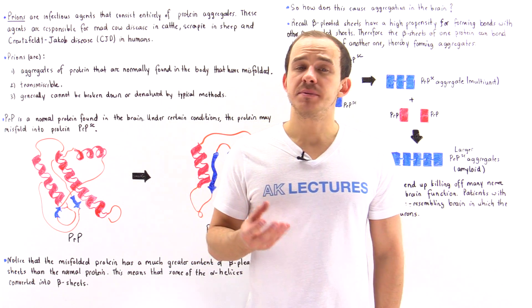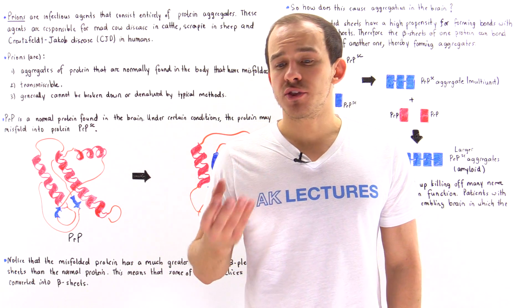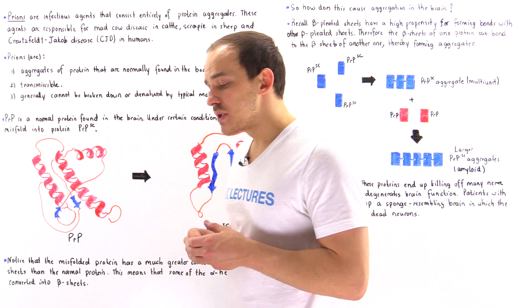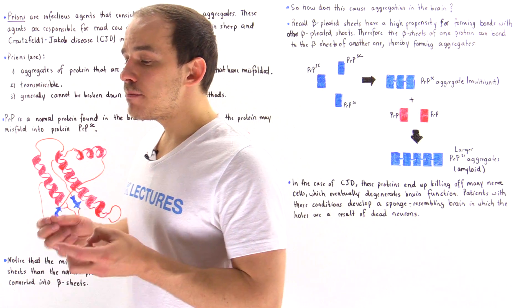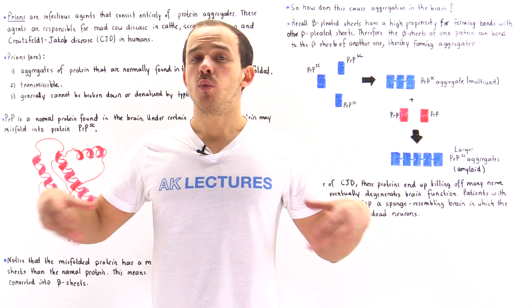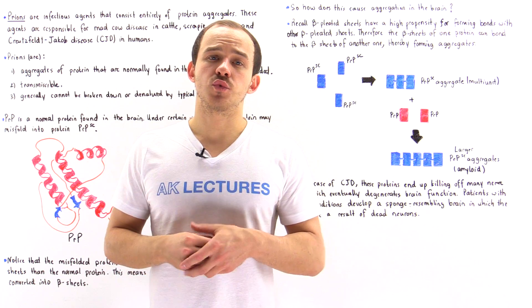The process by which a polypeptide folds into its final three-dimensional structure is very complex and intricate. Now what happens if that polypeptide that initially begins with the correct primary sequence folds incorrectly?